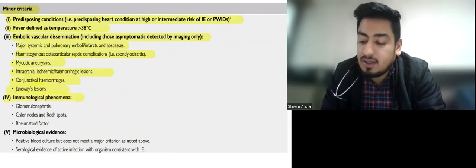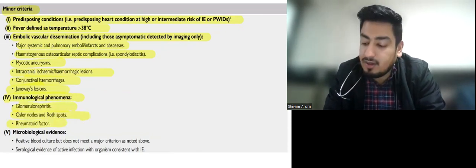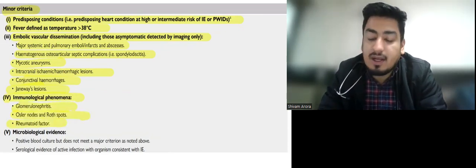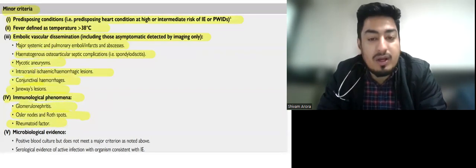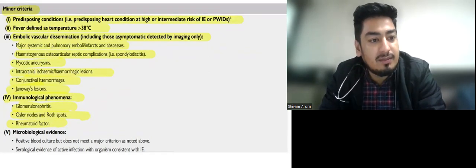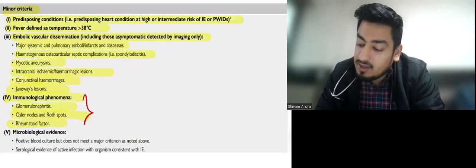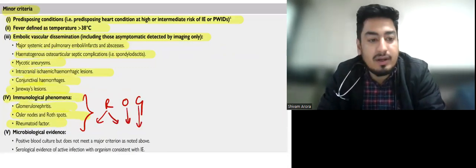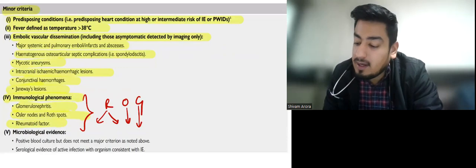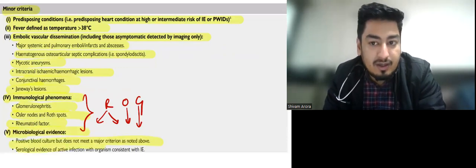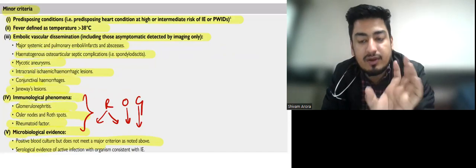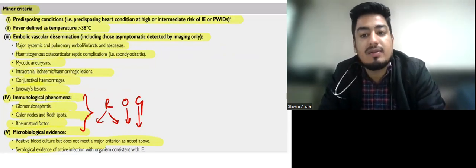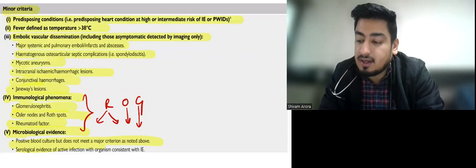Embolic phenomena also include mycotic aneurysms, intracranial ischemic or hemorrhagic lesions, conjunctival hemorrhages, and Janeway lesions. Immunologic phenomena are glomerulonephritis, Osler nodes, Roth spots, and rheumatoid factor — remember the mnemonic ROG. Microbiological evidence not fulfilling the major criterion — such as one positive blood culture or an atypical organism for IE — counts as a minor criterion.